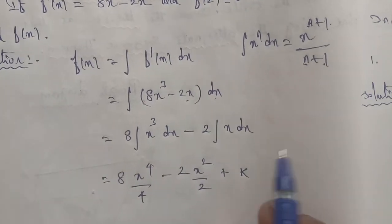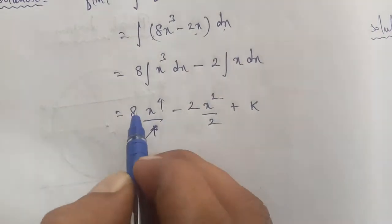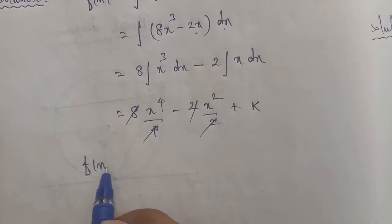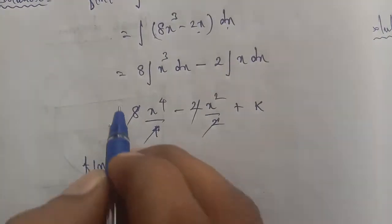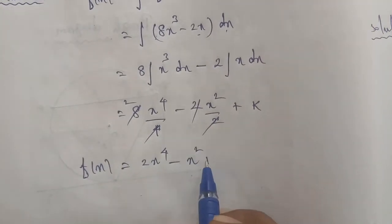Canceling terms: 8 divided by 4 is 2, and 2 divided by 2 is 1. So f(x) = 2x⁴ - x² + k.